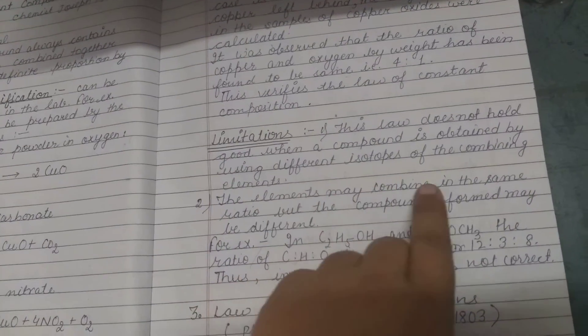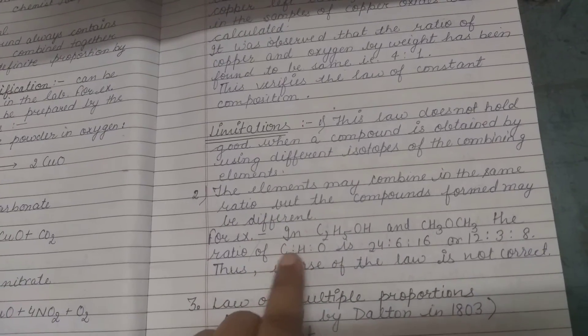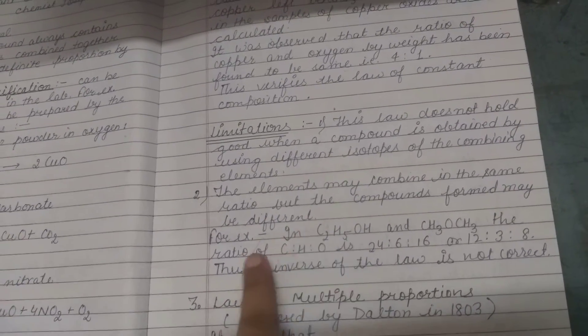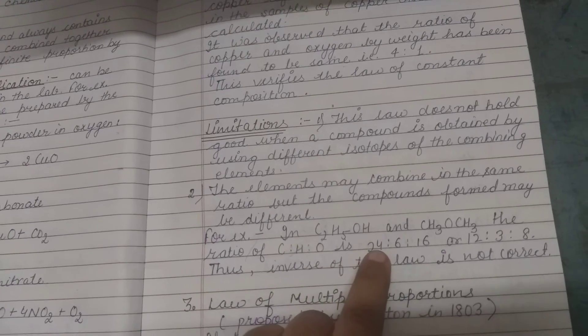Second limitation: elements may combine in the same ratio but the compound formed may be different. For example, the element ratio may be C:H:O as 4:6:16 or 2:3:8. The ratio is the same, but the compounds are different.